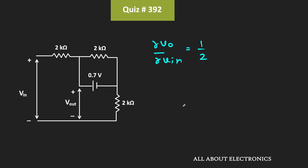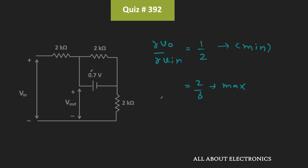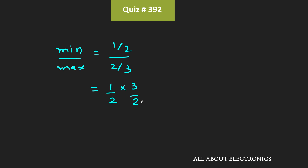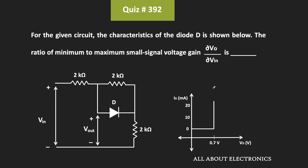So in this way we got two ratios. The minimum ratio is 1/2 and the maximum ratio is 2/3. If we find the ratio of minimum to maximum small signal voltage gain, then minimum divided by maximum is equal to (1/2) divided by (2/3), which equals (1/2) times (3/2), that is 3/4, which comes out as 0.75. So for the given diode circuit, the ratio of the minimum to maximum small signal voltage gain is equal to 0.75.